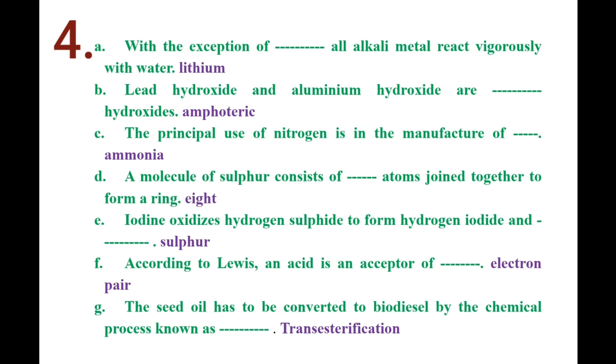According to Lewis, an acid is an acceptor of an electron pair. An electron pair acceptor is known as a Lewis acid.